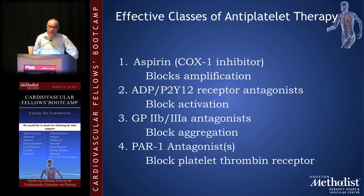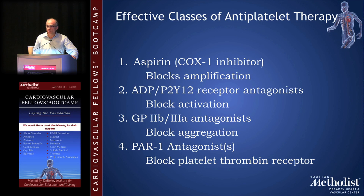GP2B3A antagonists block aggregation — they do not change, and may even stimulate, activation. Physiologically they work very differently than the P2Y12 antagonists. And finally, PAR1 — protease-activated receptor 1. When Merck gets their stuff together and markets vorapaxar, which is their PAR1 antagonist, they will make sure you hear about it. This is the primary thrombin receptor on the human platelet.